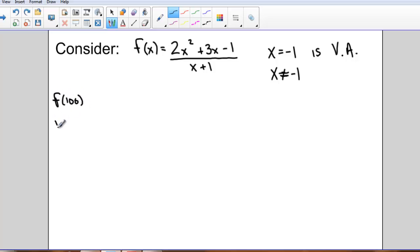Let's do f evaluated at 100, f evaluated at 1,000, f evaluated at 10,000. And why don't you sub those into this function? And if there's a horizontal asymptote, we should get close to the same number each time we do this.